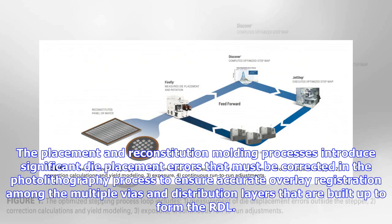The placement and reconstitution molding processes introduce significant die placement errors that must be corrected in the photolithography process to ensure accurate overlay registration among the multiple vias and distribution layers that are built up to form the RDL.